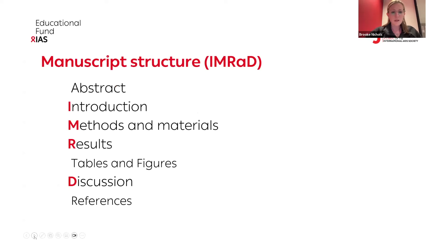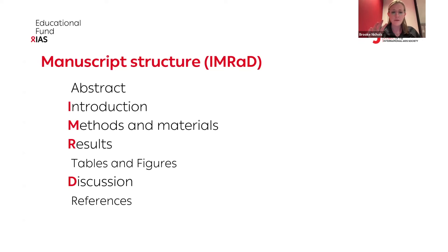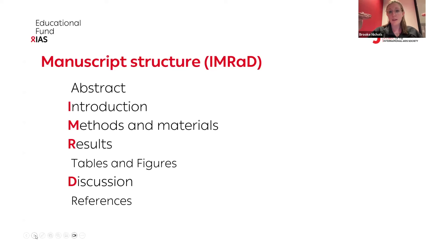The structure of your manuscript will depend on the type of article you're writing. There are different types — review articles, debates, comments — but for this webinar, we're going to focus on research manuscripts. Each journal might have specifications that differ a bit, but this is typical of what you see in most journals. It usually starts with the abstract, followed by the introduction, methods, results — which will have all the tables and figures — followed by the discussion and the references.